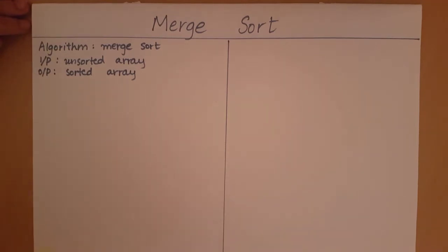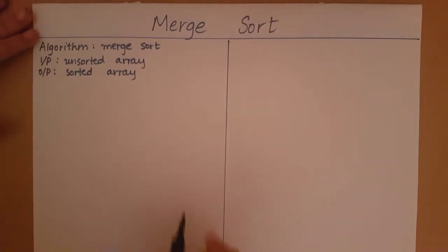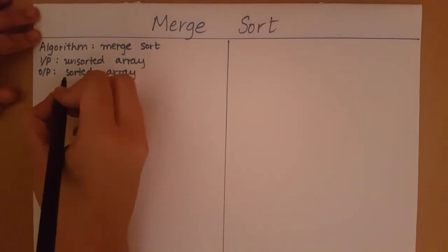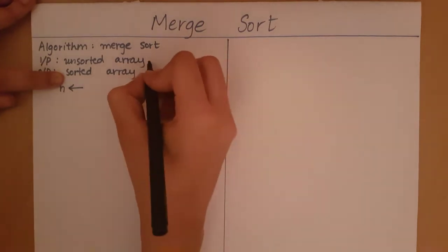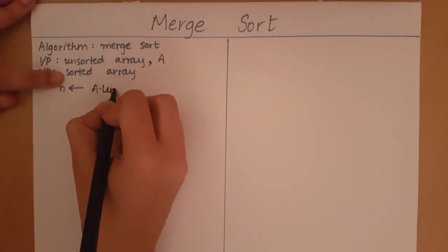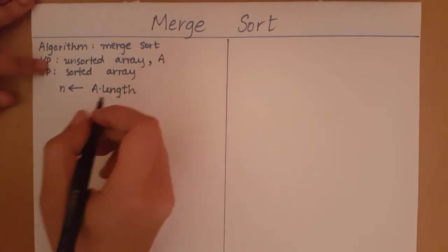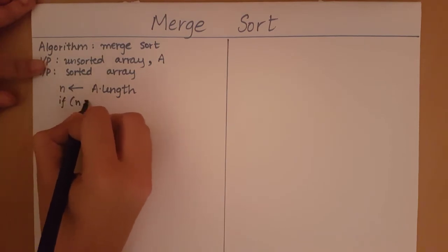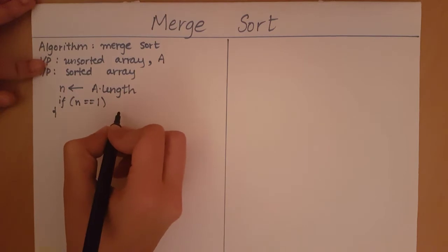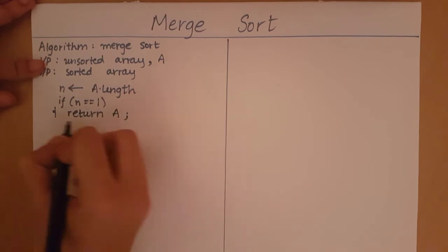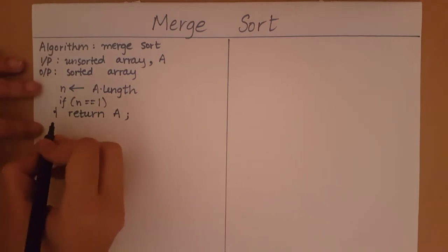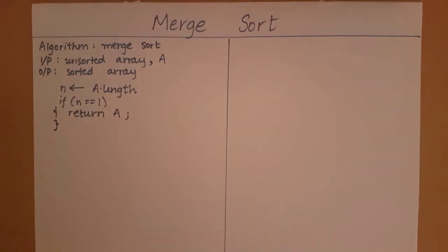We know that a single element array is going to be a sorted array. That is going to be our base case — the point at which we say the array is sorted and we don't need to divide it further. Let's write the base case first. I'll store the length of array A in variable n. If n equals 1, that is a single element array, in that case I want to return A, because that is going to be the sorted array of only one element. So this was our base case.